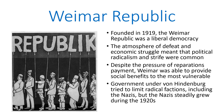In Germany, the Weimar Republic began to operate. It was a liberal democracy not unlike those of Britain and France at the time. However, the atmosphere of defeat and economic struggle meant that political radicalism and strife were quite common, whereas in most of Europe outside of Germany and Russia, things were relatively stable in the 1920s. Despite the pressure of reparations payments, Weimar was able to provide social benefits to the most vulnerable citizens, so it was a representative government. Government under von Hindenburg, one of Germany's World War I heroes, tried its best to limit radical factions through the use of the army as a police force. And the radical factions that von Hindenburg attempted to limit included the Nazis.